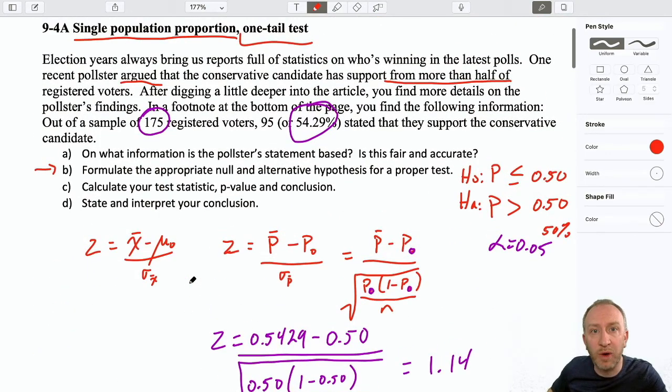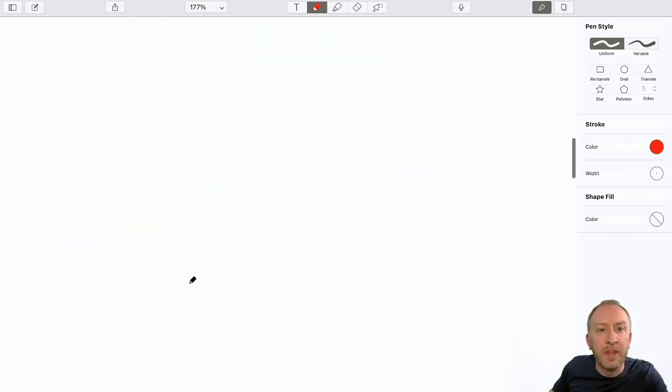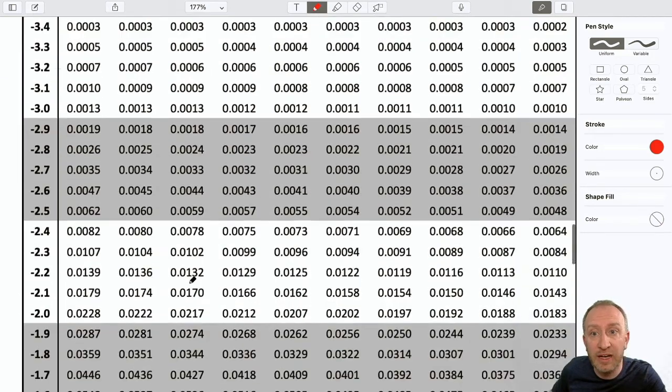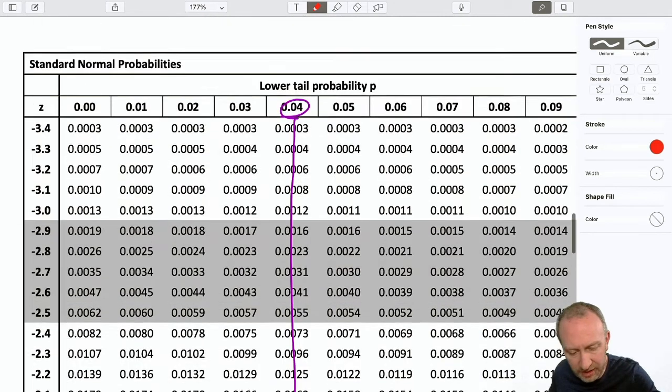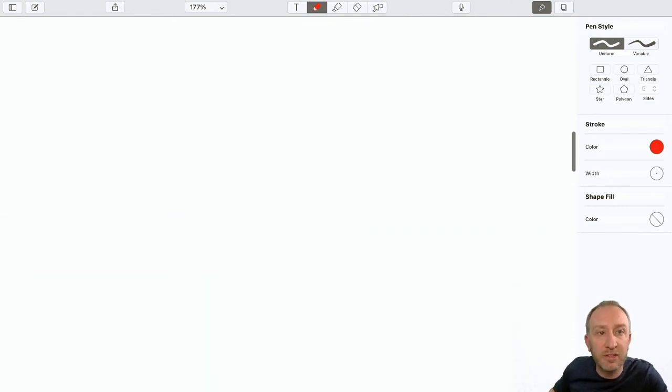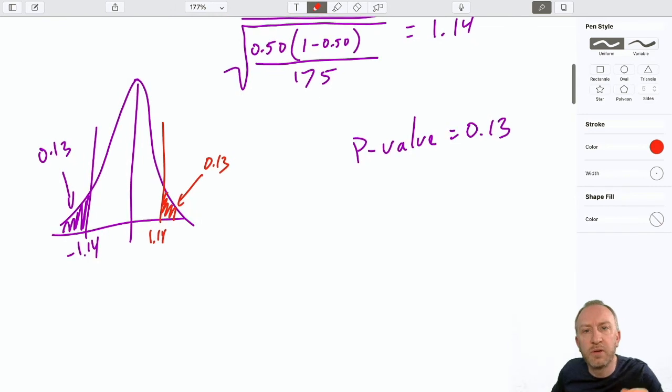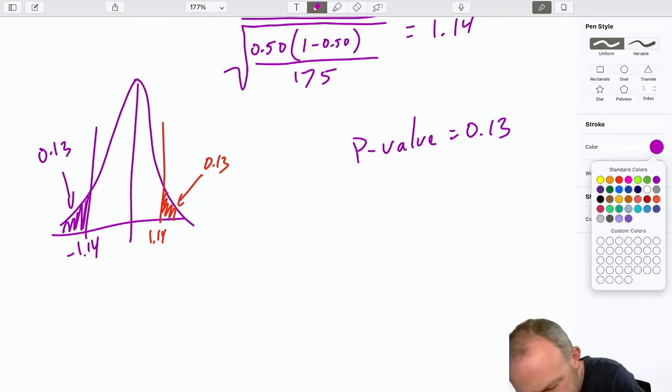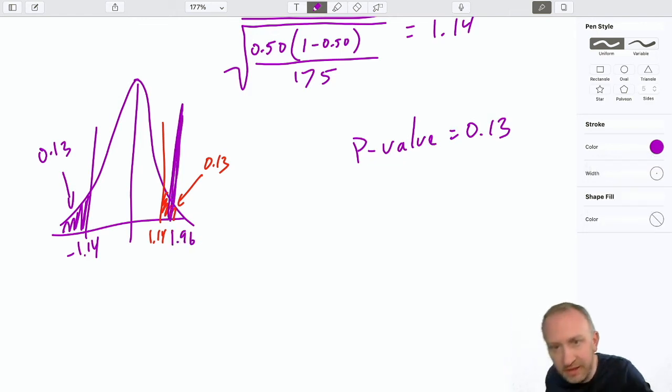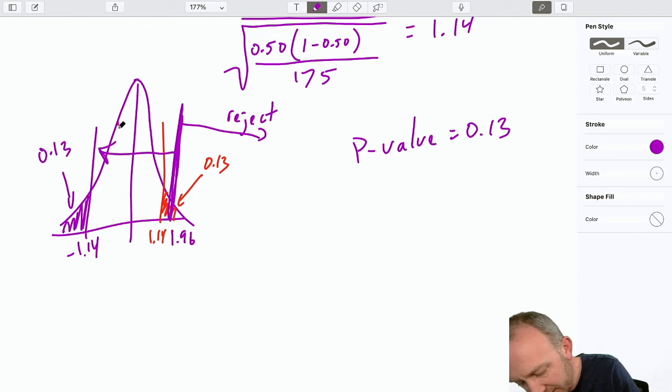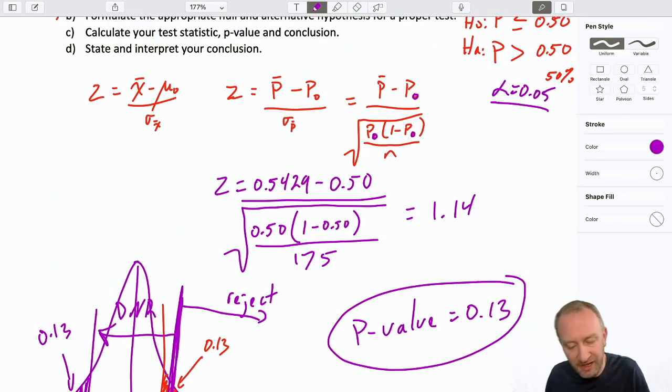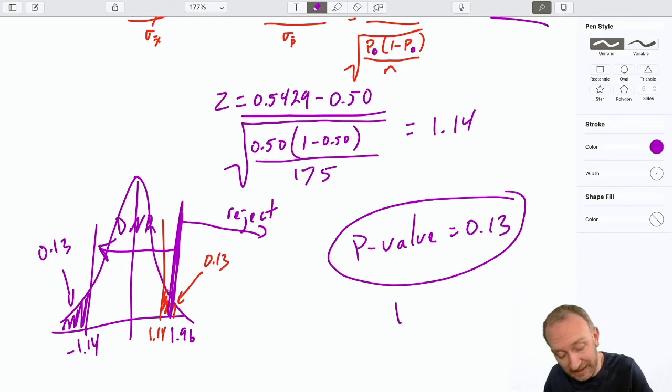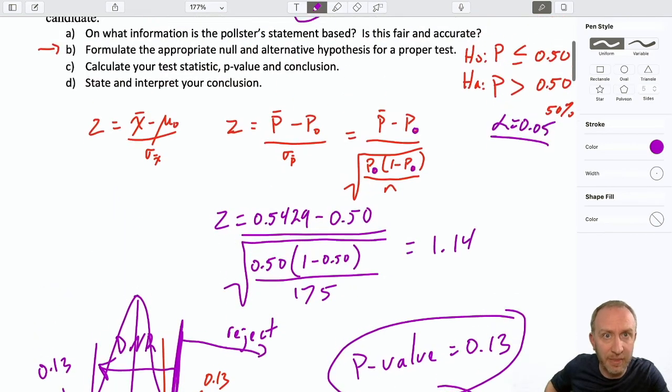We can use our critical value approach as well. And it's a familiar number. If we're using alpha as 0.05, then I'm looking for 0.025 in my table. And I see that right here. So that's 1.96 as my critical value. So here's this 1.96 right here. That defines my rejection space. My test statistic is in the do not reject space. And of course, my p-value is much larger than my level of significance.